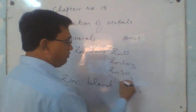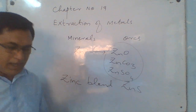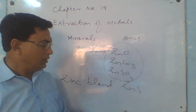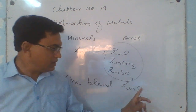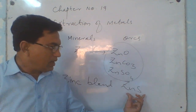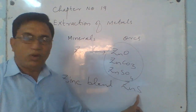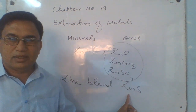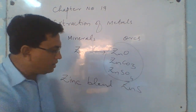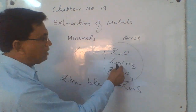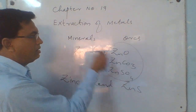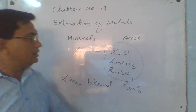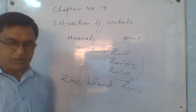These other compounds are where zinc cannot be extracted economically easily. But zinc sulfide is the chemical compound of zinc from which zinc can be extracted economically — this is called zinc ore, while the others are called zinc minerals. This is the basic difference.